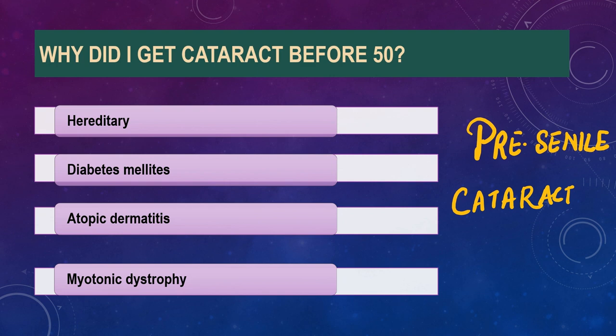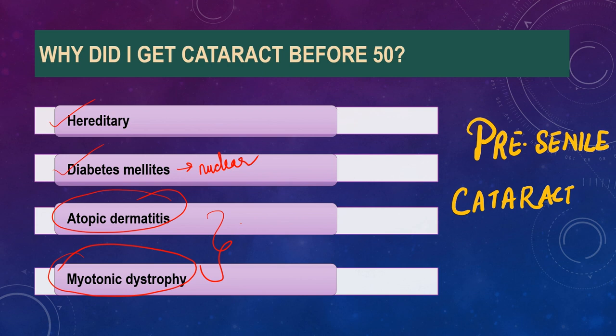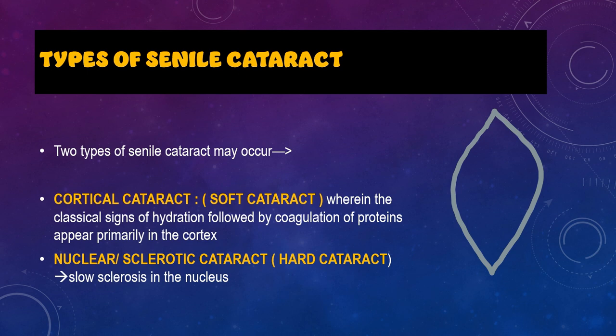The role of heredity is definitely known for pre-senile cataract. The onset of cataract is earlier with every successive generation — if someone in your family developed cataract at age 50, there are greater chances you will develop it at 50 or even earlier. Diabetes is a definite risk factor leading to earlier cataract formation, and it usually causes nuclear cataract. Atopic dermatitis and myotonic dystrophy are also disorders leading to earlier cataract formation, usually causing a subcapsular cataract.